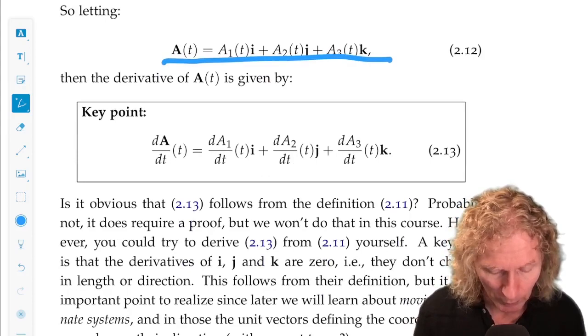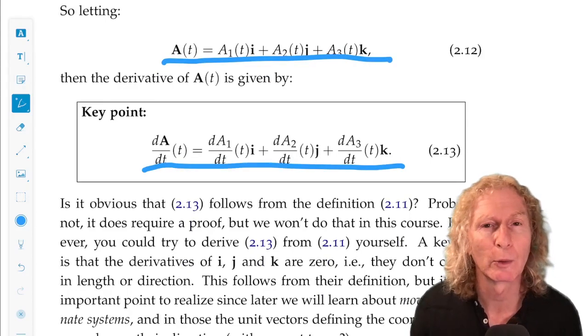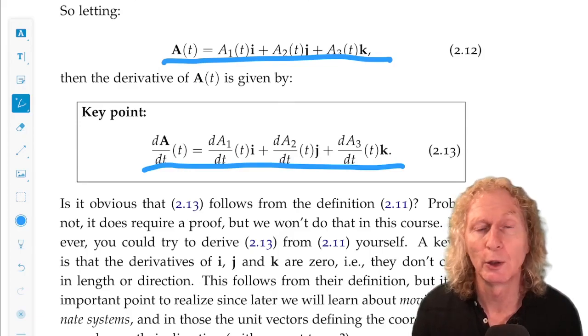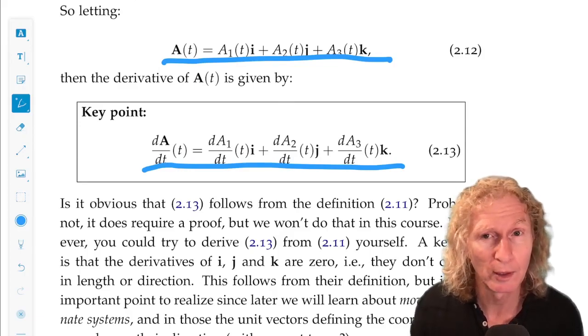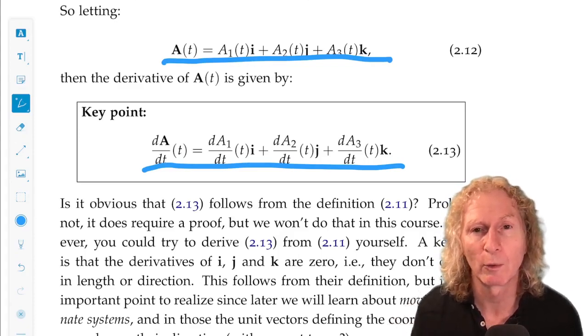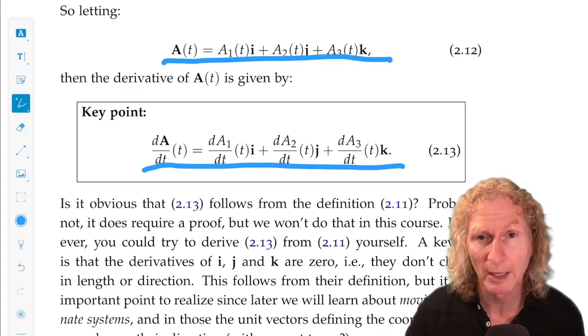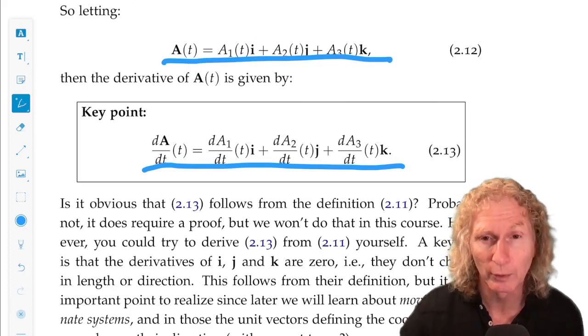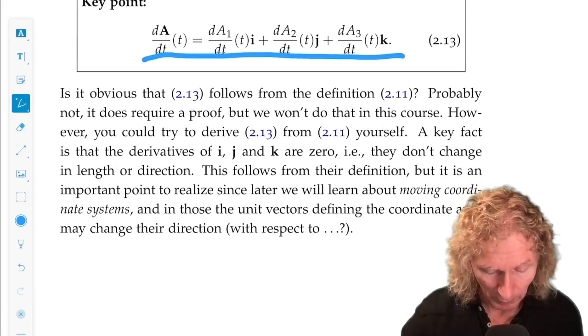So this is quite familiar. Now that will change later when we consider coordinate systems where the unit vectors can vary in time, but they're going to be unit length. So what varies is their direction, but not now. i, j, and k always fix length, always fix direction. So their derivative is always zero.